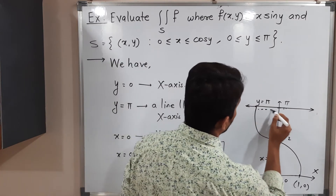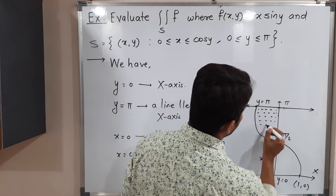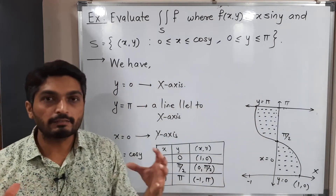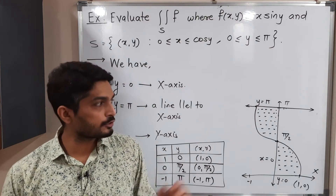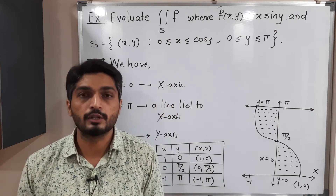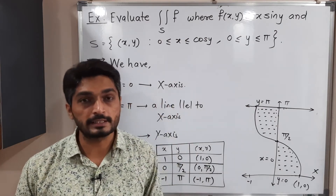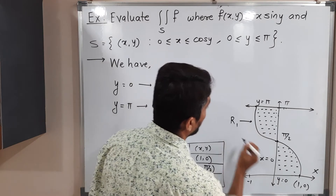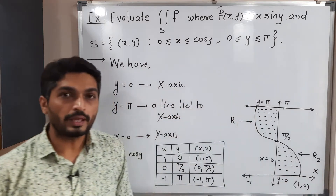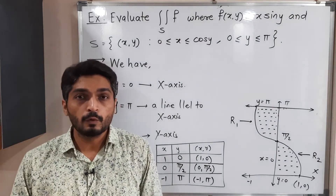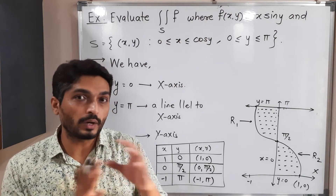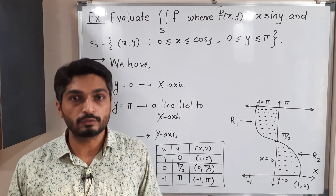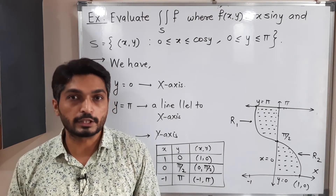The region has two distinct parts, so we cannot consider the entire region simultaneously. We call them region R1 and region R2. We will solve the integration for R1 first, then for R2, and finally add them together to get the required value of the double integration.